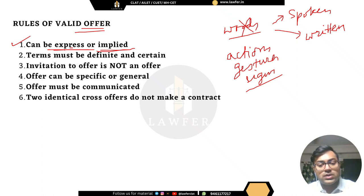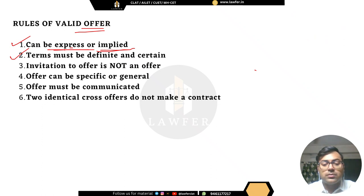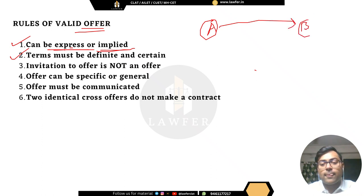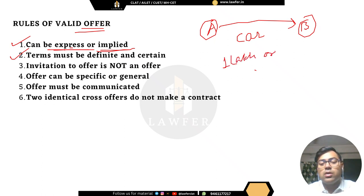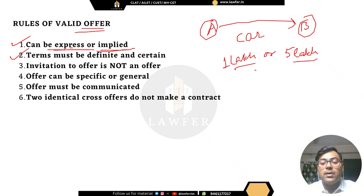Second rule of offer: the terms must be definite and certain. For example, if A makes an offer to B saying 'you can purchase my car for either rupees 1 lakh or 5 lakh,' the consideration is not certain — the terms are not fixed. Any offer must have very fixed, definite, and certain terms and conditions.